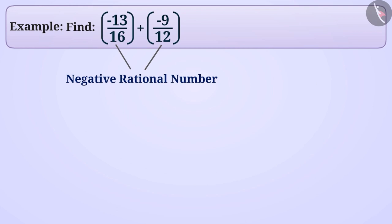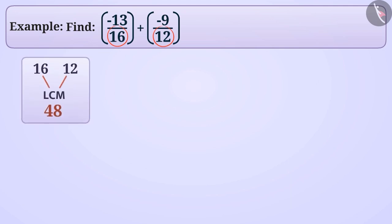Here, we see that the denominator of each of the two rational numbers is not the same, so let us make it equal. The LCM of 16 and 12 is 48, so we will change the denominators of both numbers to 48.